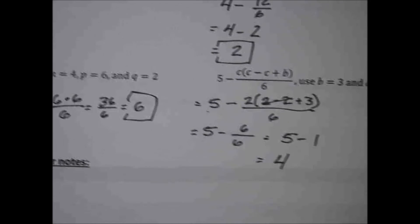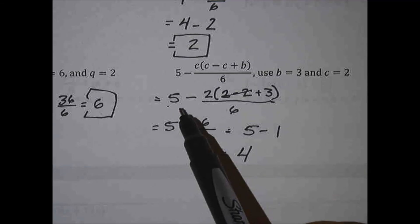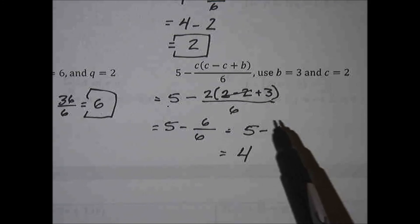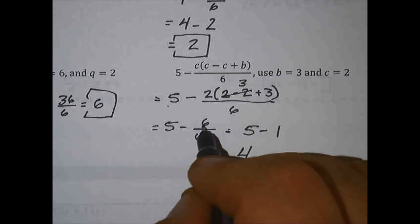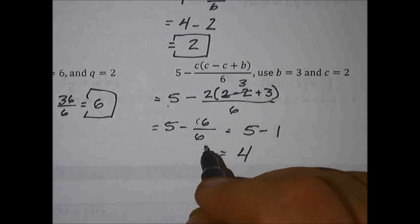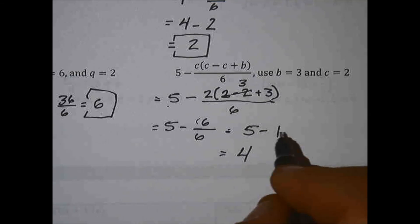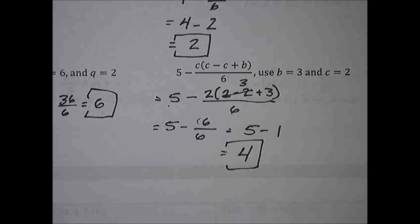The last problem: 5 minus c times (2 minus 2 plus 3), all over 6. c is 2. Working inside the parentheses first: 2 minus 2 goes away, leaving 2 times 3, which is 6. So we have 6 over 6, which is just 1. Then 5 minus 1 is 4. To summarize: the 2's cancelled, giving 2 times 3 equals 6, then 6 divided by 6 is 1, and finally 5 minus 1 is 4. Go ahead and summarize your notes, practice, and good luck on the mastery challenge.